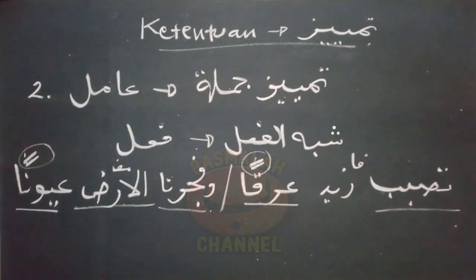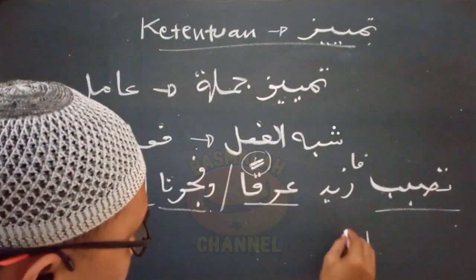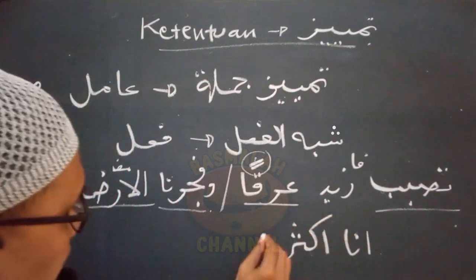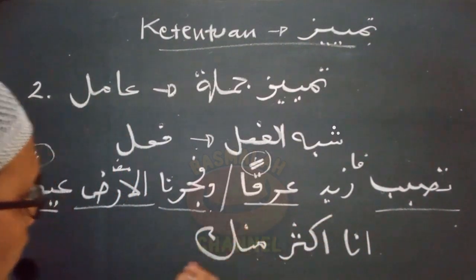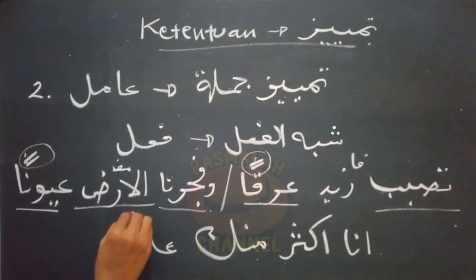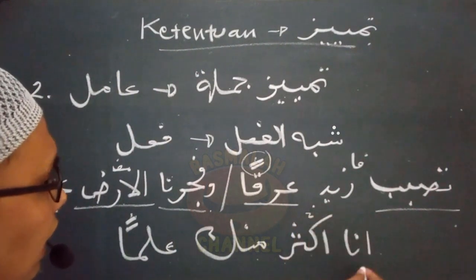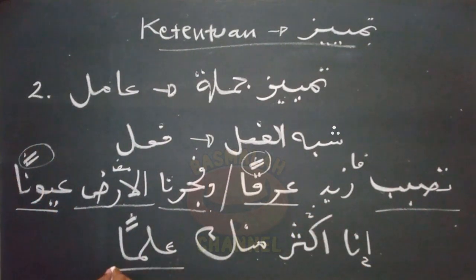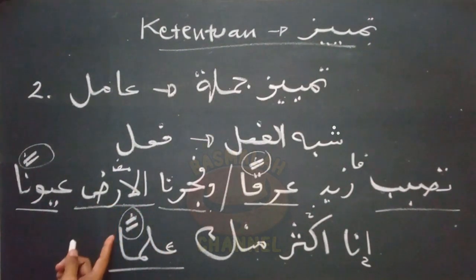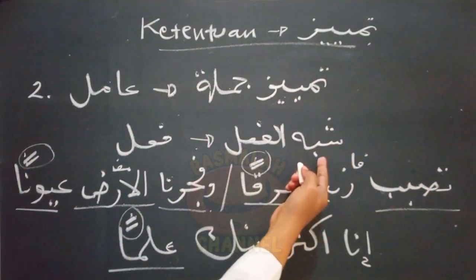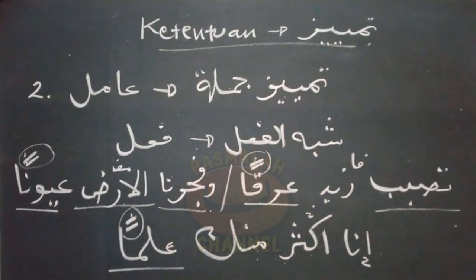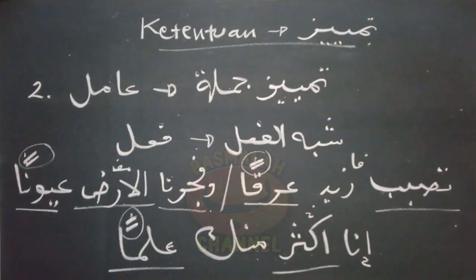Contoh yang lain, seperti lafad 'Ana aktharu minka ilman' — saya lebih banyak dari kamu ilmunya. Lafad 'ilman' ini adalah merupakan Tamyis yang i'rabnya Nasob, sementara amilnya adalah syibhul fi'li, yaitu kalimat yang menyerupai fi'il, yang dalam hal ini adalah lafad 'aktharu' yang berupa isim tafdhil.